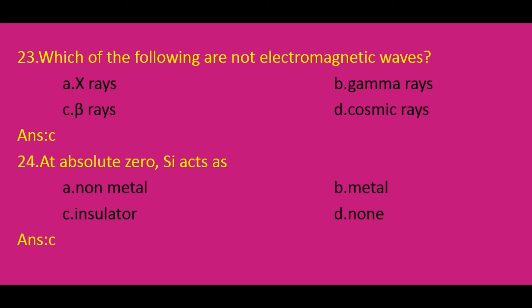Which of the following are not electromagnetic waves? X-rays, gamma rays, and cosmic rays are electromagnetic waves, but beta rays are not electromagnetic waves. So the answer is C.